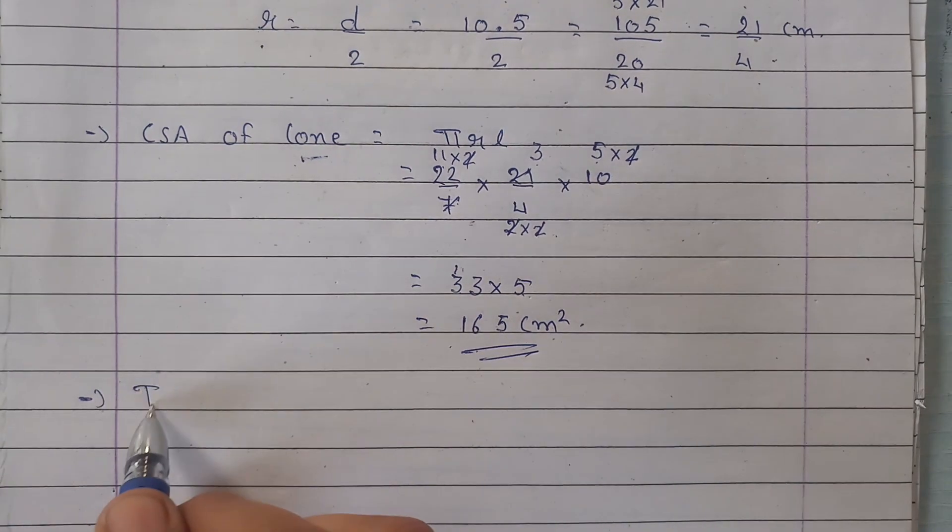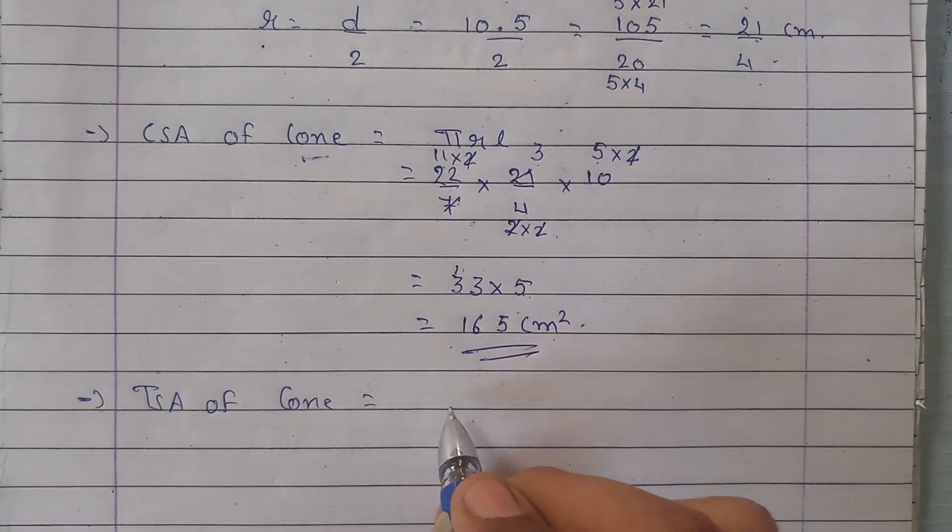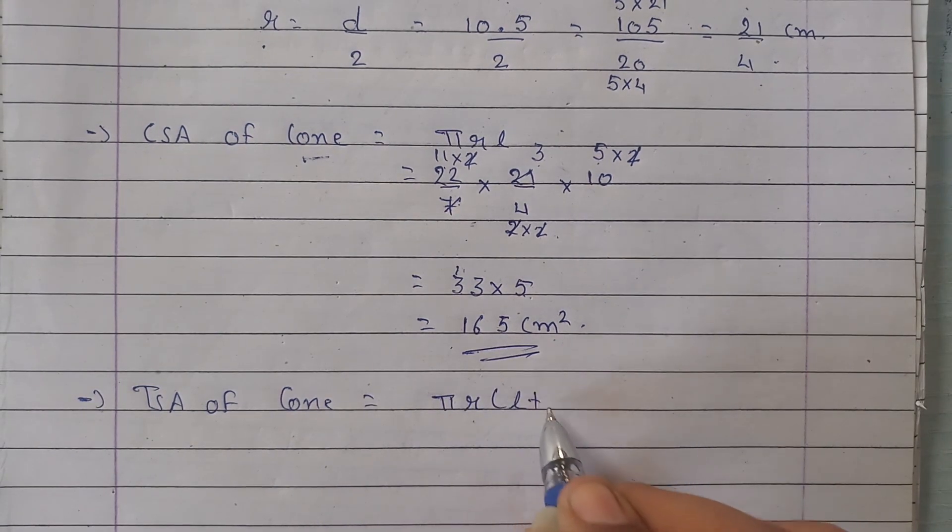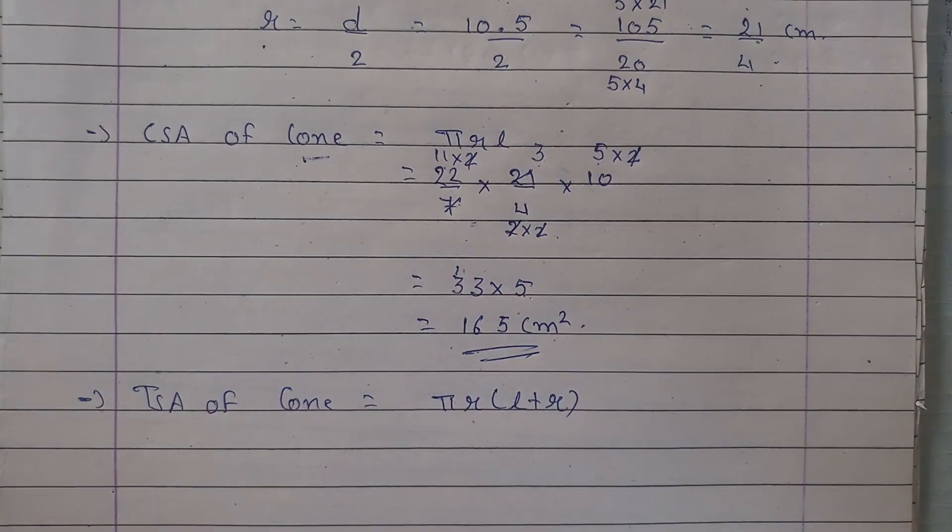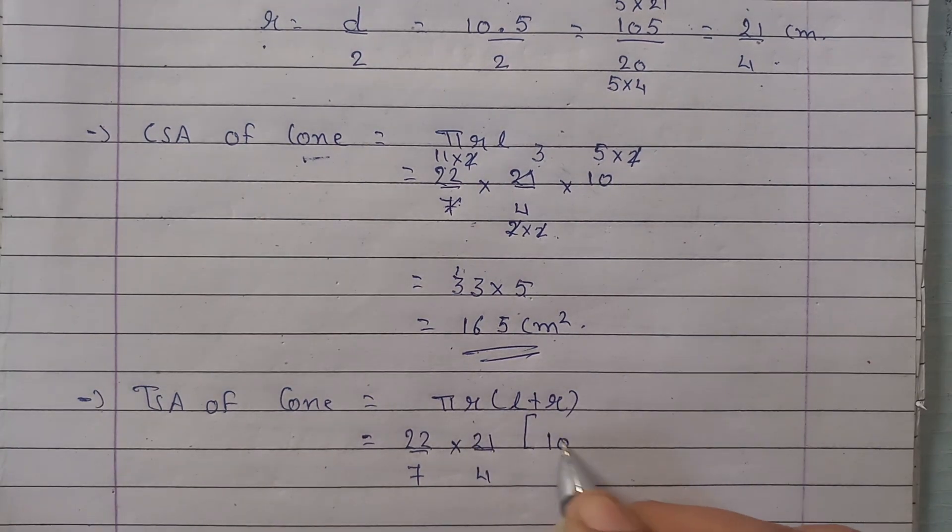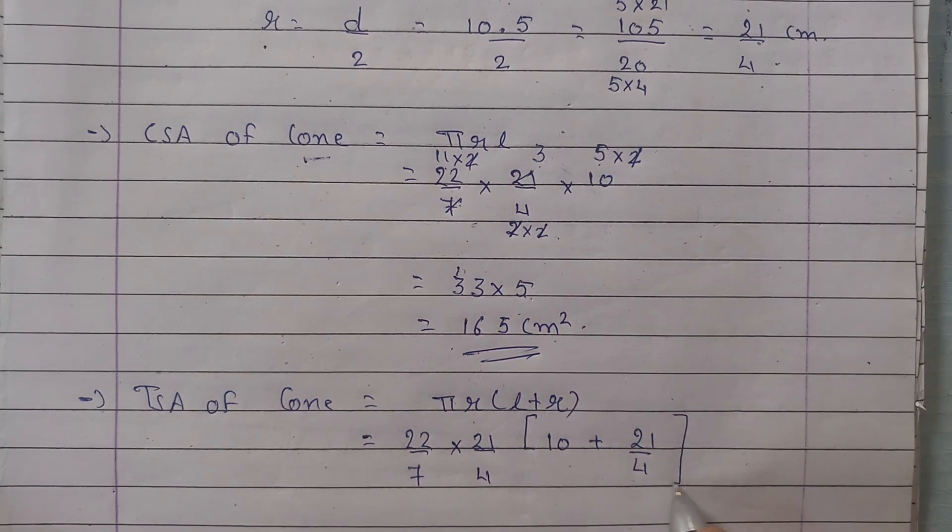Now we need to find the total surface area. So this formula will be πr into (l plus r). On putting the values, π will be 22 upon 7, radius is 21 upon 4, slant height is 10, and again radius is 21 upon 4.